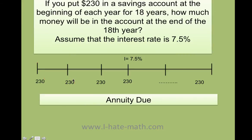So how do we do this in the calculator? Well, let's see. We're going to go ahead and put the following information. N equals 18, I equals 7.5, the payment $230, present value is 0, and then we have the future value. Let's go ahead and do it in the TI-84.